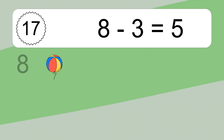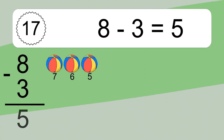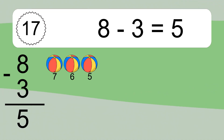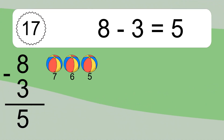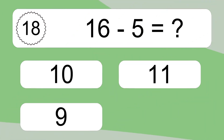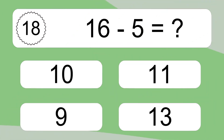8 minus 3 equals what? 8 minus 3 equals 5. Let's count it: 7, 6, 5.